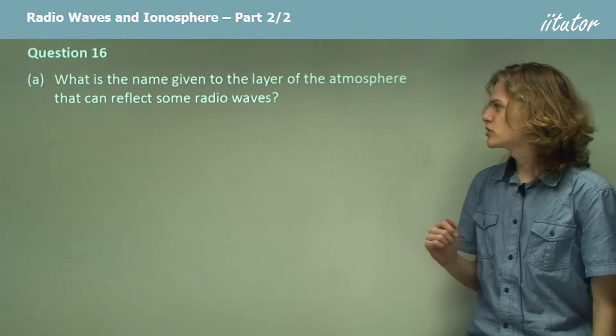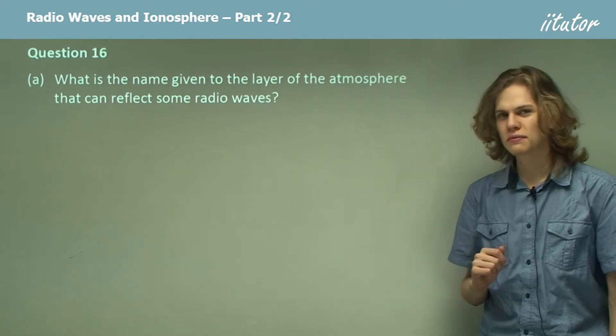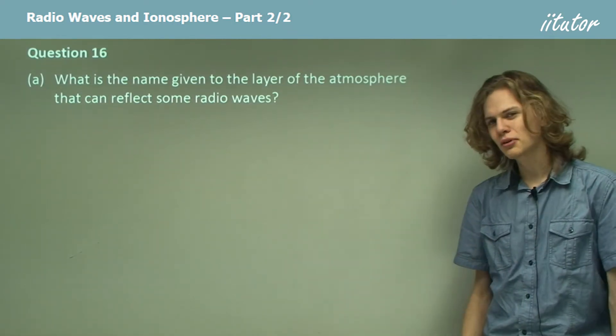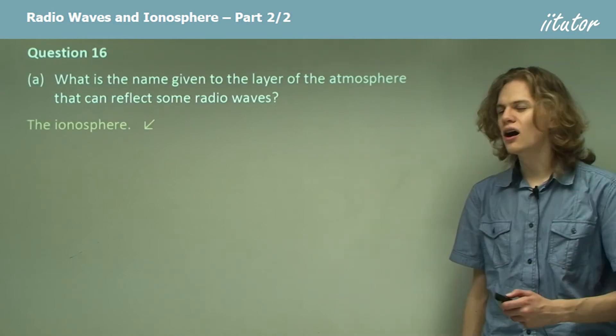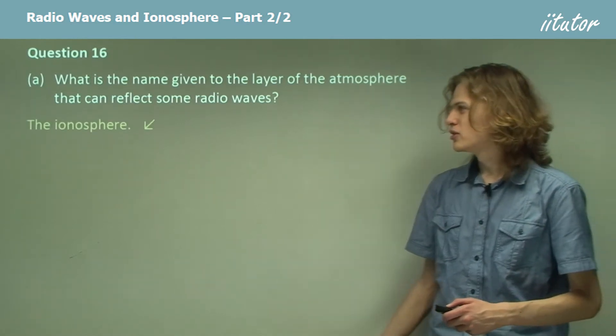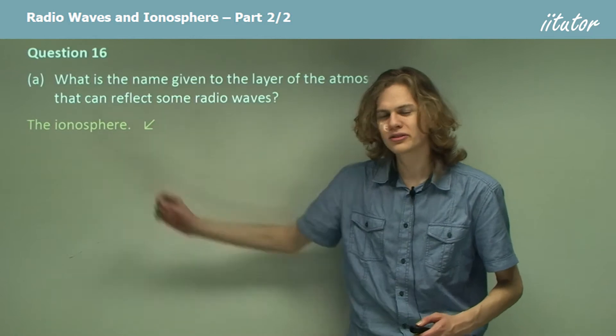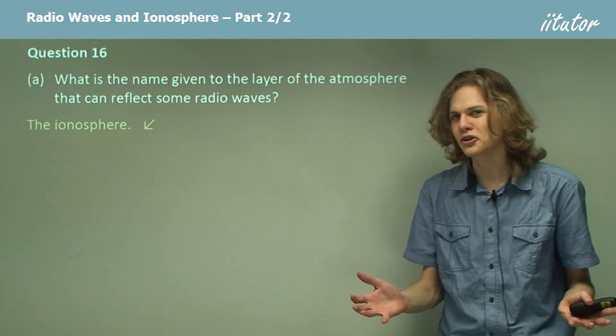What is the name given to the layer of the atmosphere that can reflect some radio waves? Well, as I'm sure you can remember, it's called the ionosphere. This is because it's made out of ions and it's in a sphere around the Earth.